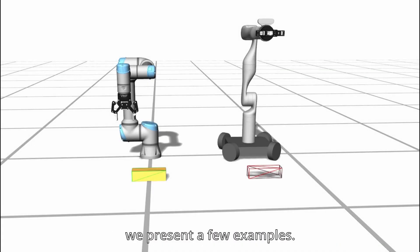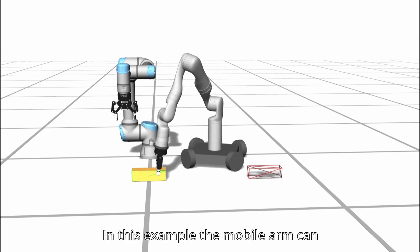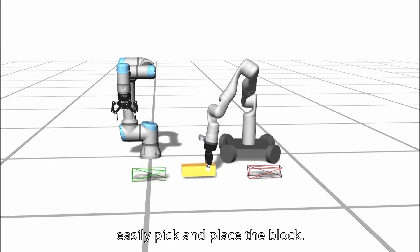To illustrate the expressiveness of our formulation, we present a few examples. In this example, the mobile arm can easily pick-and-place the block.